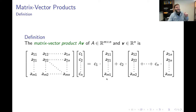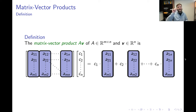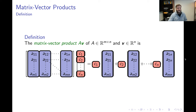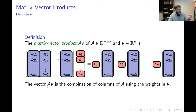If that setup is valid — if the number of coordinates in the vector matches the number of columns in the matrix — then the matrix vector product is defined as a linear combination of the columns of the matrix. The vectors we use are the columns of the matrix, and the coordinates in the vector we're multiplying by serve as the weights in the linear combination. So we scale the first column by the first coordinate, the second column by the second coordinate, and so on.